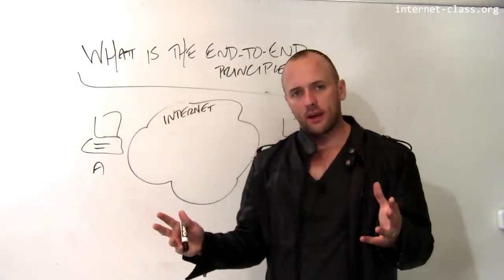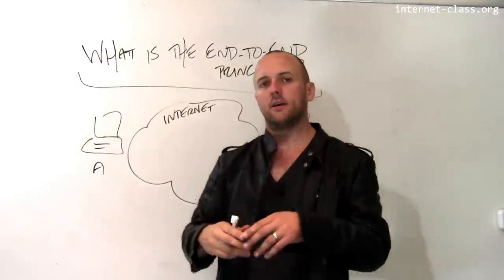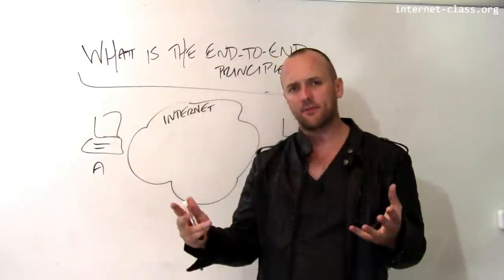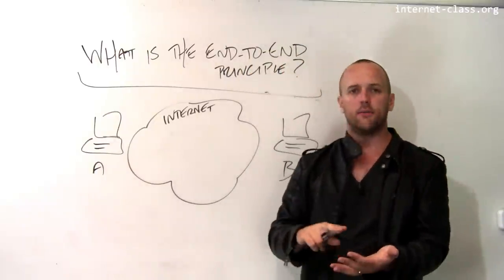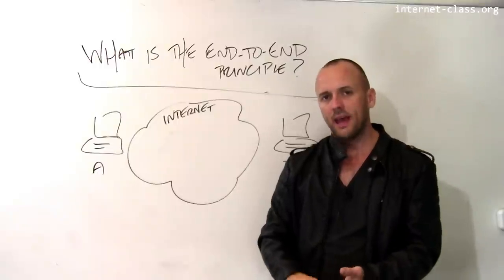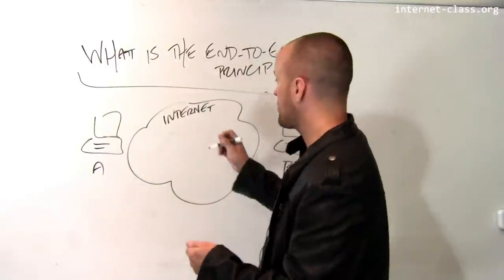Remember that originally, Cerf and Kahn had designed a protocol suite for the internet that had a lot of different features: reliability, flow control, ordered delivery. And that was separated out into two components.